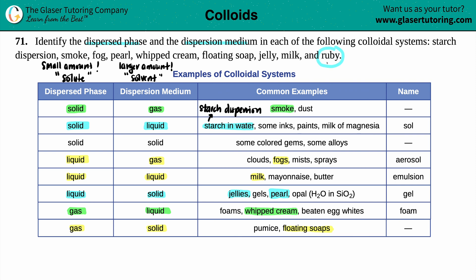Last but not least is ruby. Ruby isn't explicitly on the chart, but ruby is a type of gem — the red gem. Ruby falls under colored gems. It's when you mix a small amount of one solid as the dispersed phase into a larger solid — these two solids just have to be a different structure or makeup.